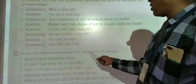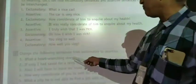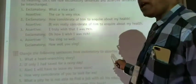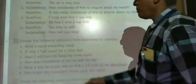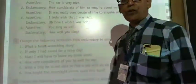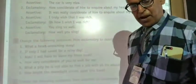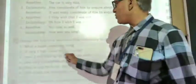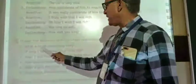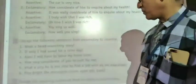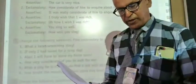Change the following sentences from exclamatory to assertive. All the following sentences are given in exclamatory form and we have to change them into assertive sentences. Question number one: 'What a heart-wrenching story!' The answer will be: since no subject is given, we use 'it.' So: 'It was a very heart-wrenching story.' Question number two: 'If only I had saved for a rainy day!' The answer is: 'I wish that I had saved for a rainy day.'